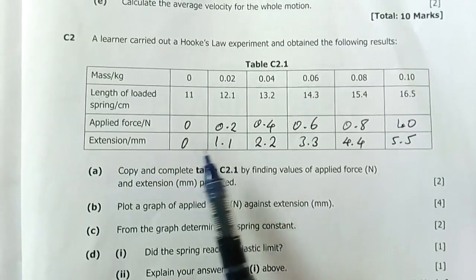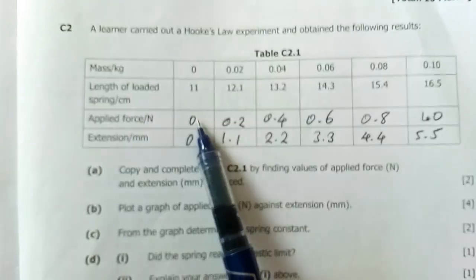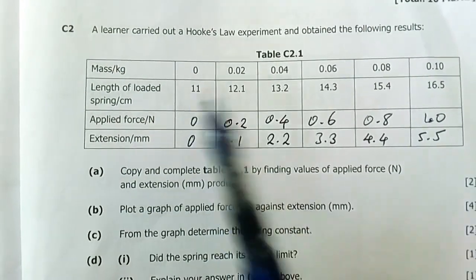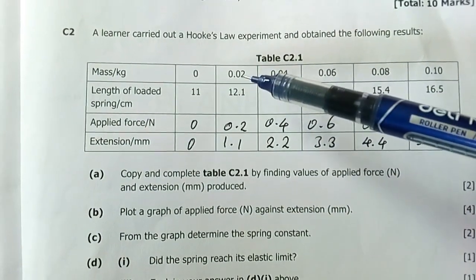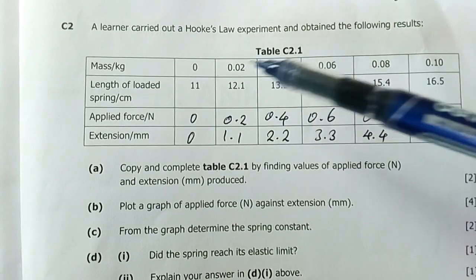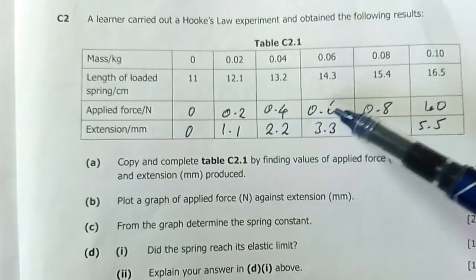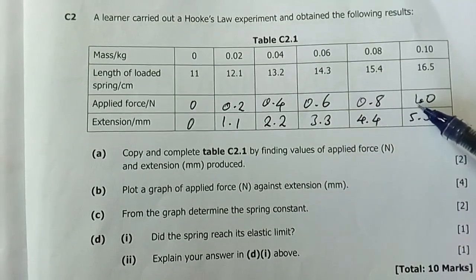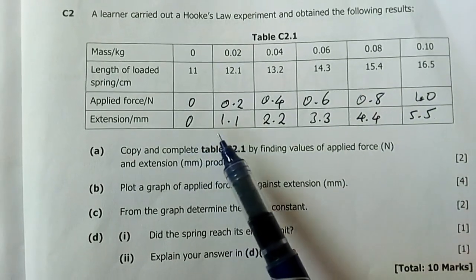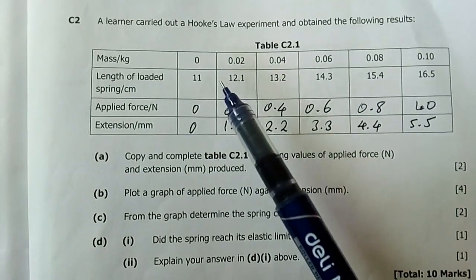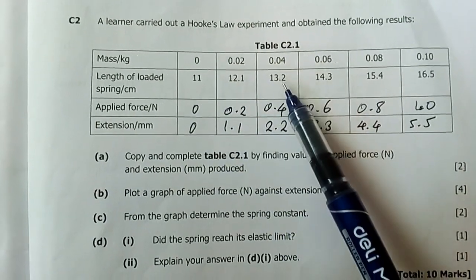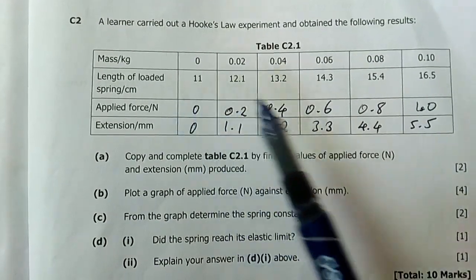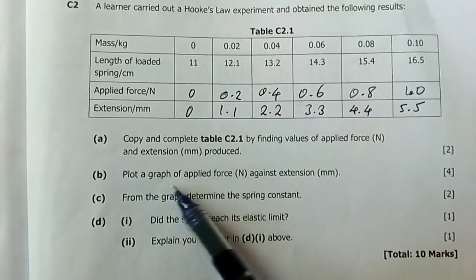Our first question is: copy and complete the table by finding the values of applied force in newtons and extension produced. So I've written here: when there's no load, the force applied is zero because there's no load, and therefore the extension is zero. The length of the spring remains at 11. I'm converting this to newtons - this is kilograms mass - so I'm converting all these values to newtons and then placing them here, because that's the force that would be the weight of these masses. Extension in millimeters: I'm subtracting 12 minus 11, that's extension. 13 minus 11, that's extension. 14 - this is my final reading - then my initial was already 11, so I subtract to find the extension. This is my extension here.